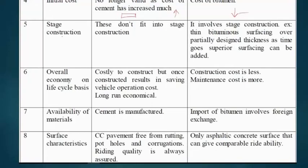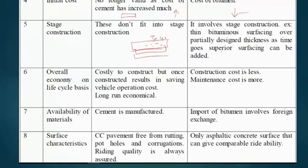Regarding stage construction, for rigid pavement, once the top layer is constructed above the base and sub-base layer, no further work is needed for 30 to 40 years. In flexible pavement, since it is made in layers, extra thickness or surfacing layers can be added as needed — this is called stage construction.